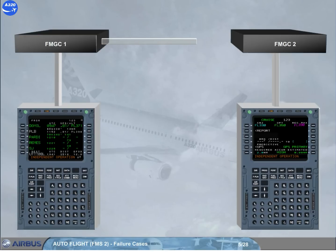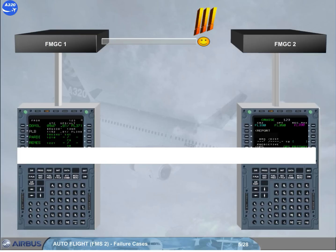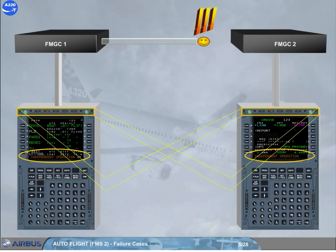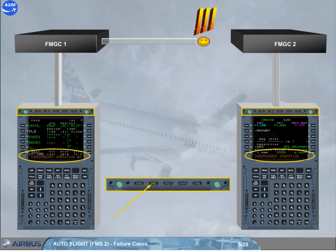If the cross-talk is lost between both FMGCs, each FMGC operates independently. This mode of operation is called independent mode. Notice the amber INDEPENDENT light on each MCDU, which indicates that the on-side FM has detected an independent mode of operation.